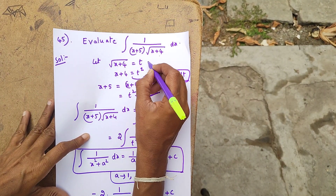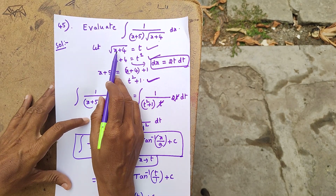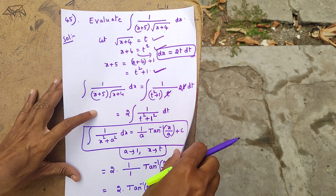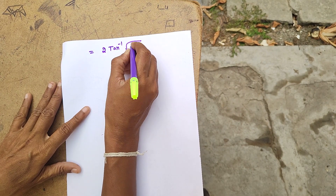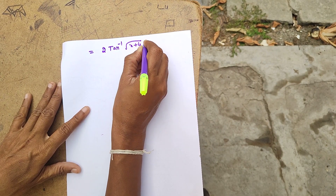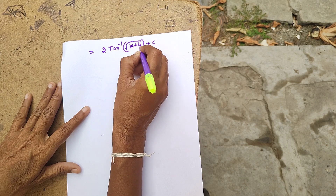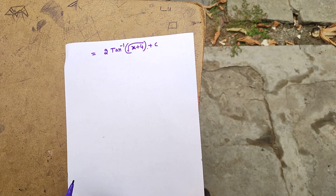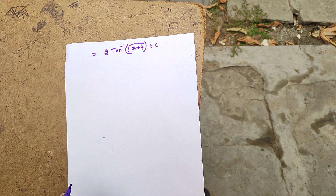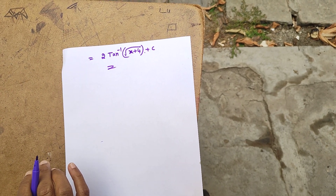Now substituting back, t equals root of (x plus 4). So the final answer is 2 tan inverse of root of (x plus 4) plus c. This is the answer — a 2-mark question.